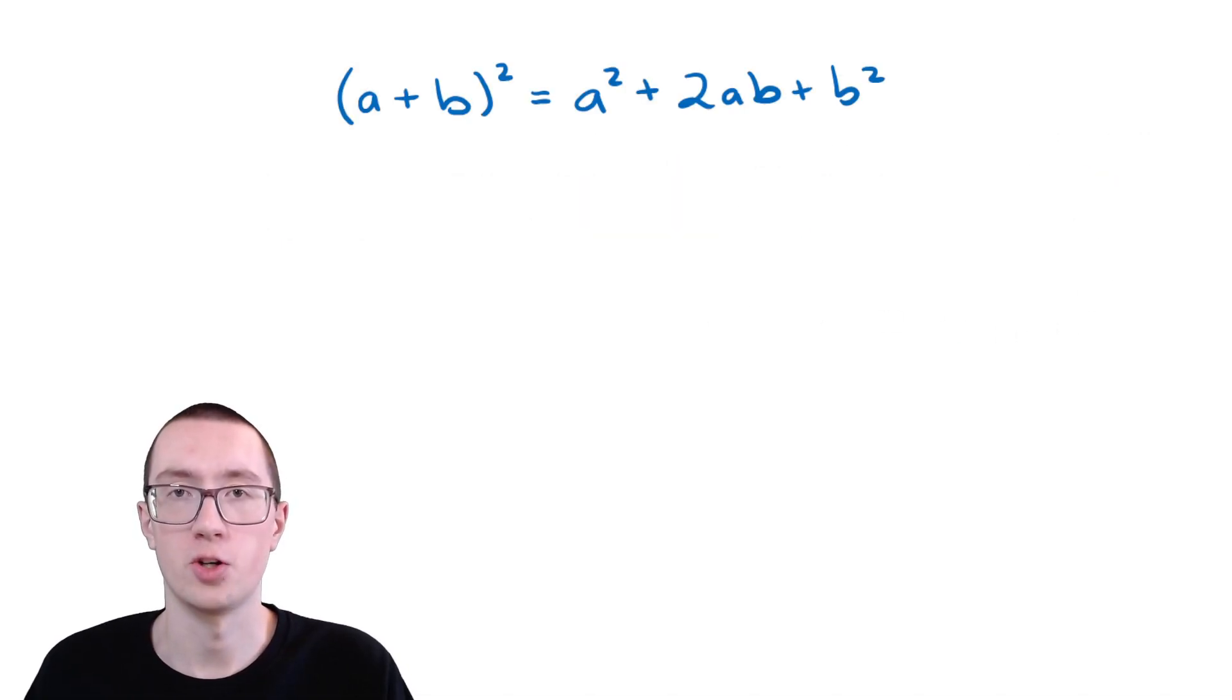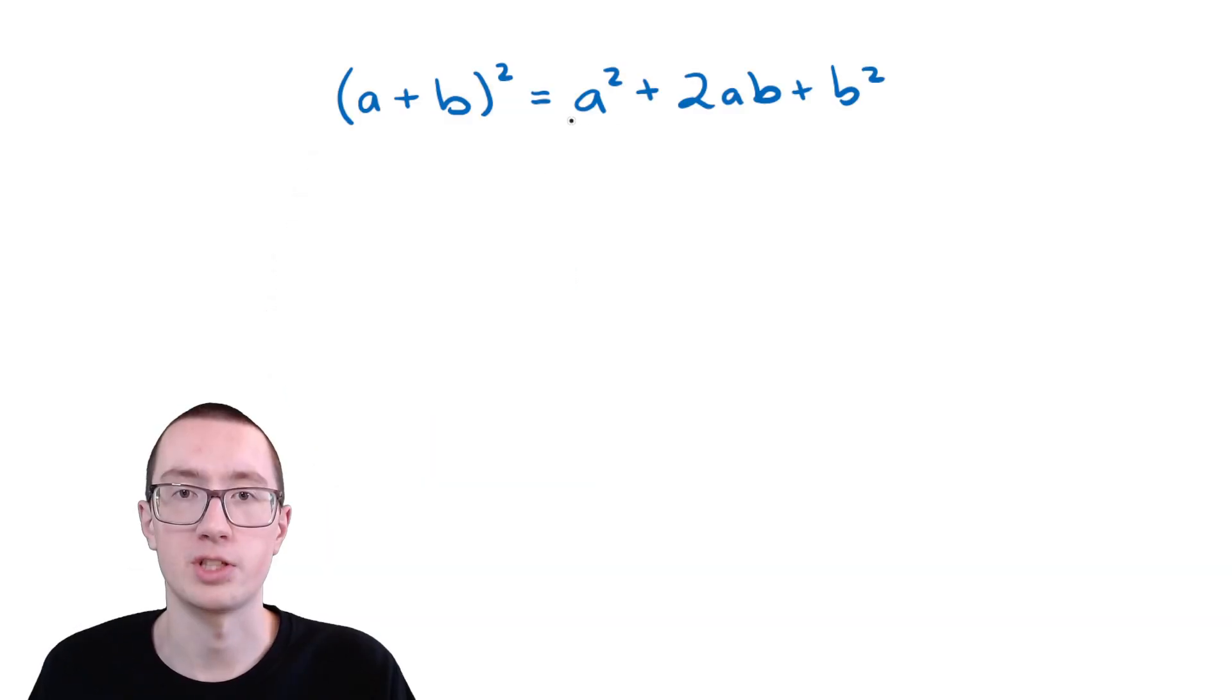So first of all, what's a polynomial? Well, our official definition for polynomials is stuff with multiple things in it. So for example, here's stuff and it has multiple things. So it's a polynomial.